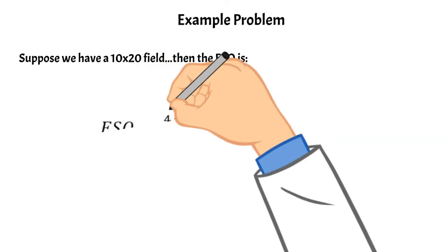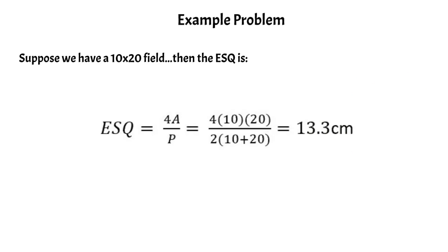Let's look at a simple example problem. Let's say we have a field size that is 10 by 20 centimeters squared. Using our equation for the equivalent square, the equivalent square field size would just be 13.3.